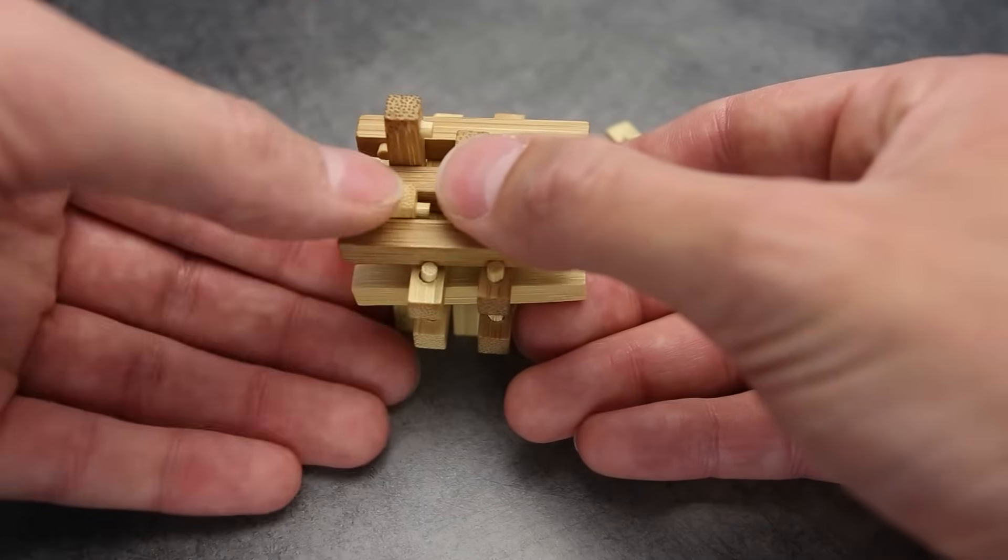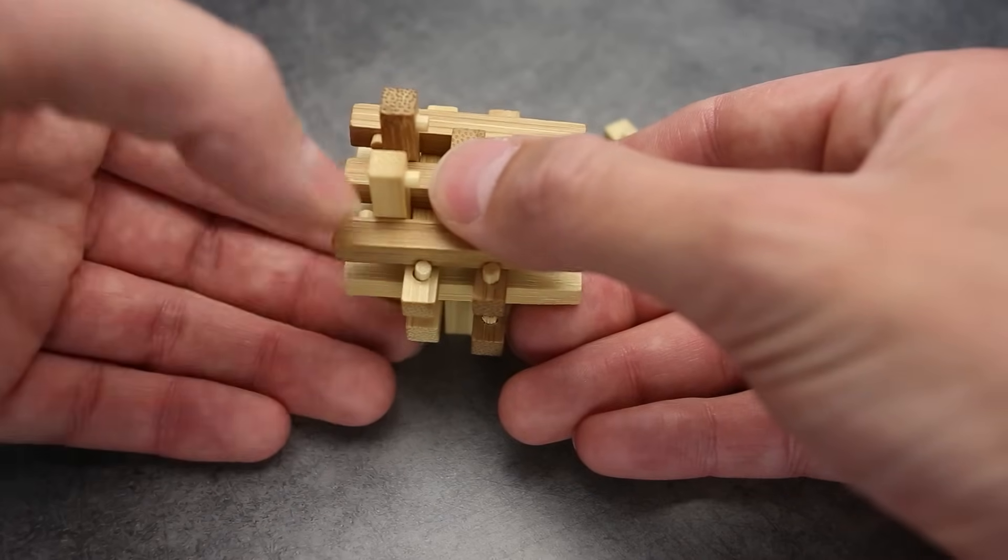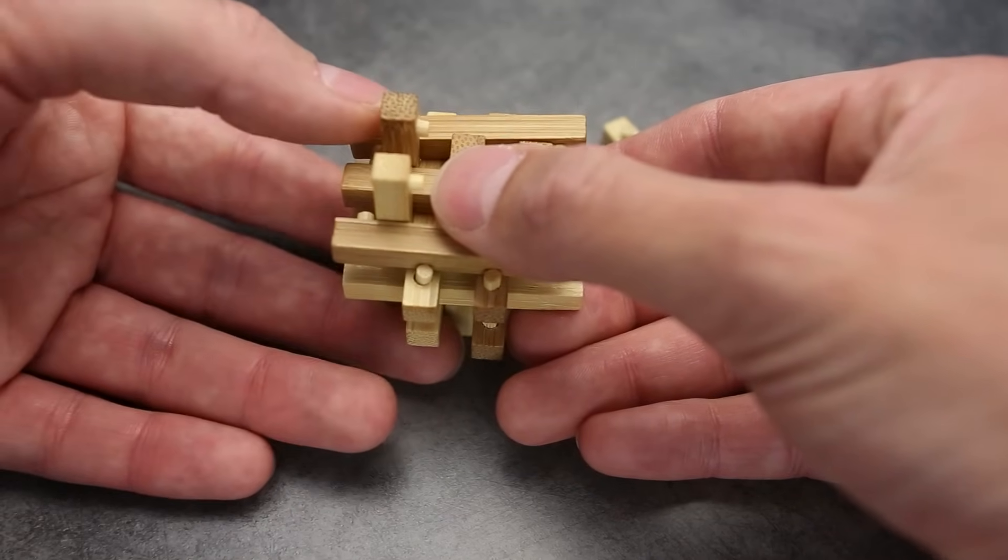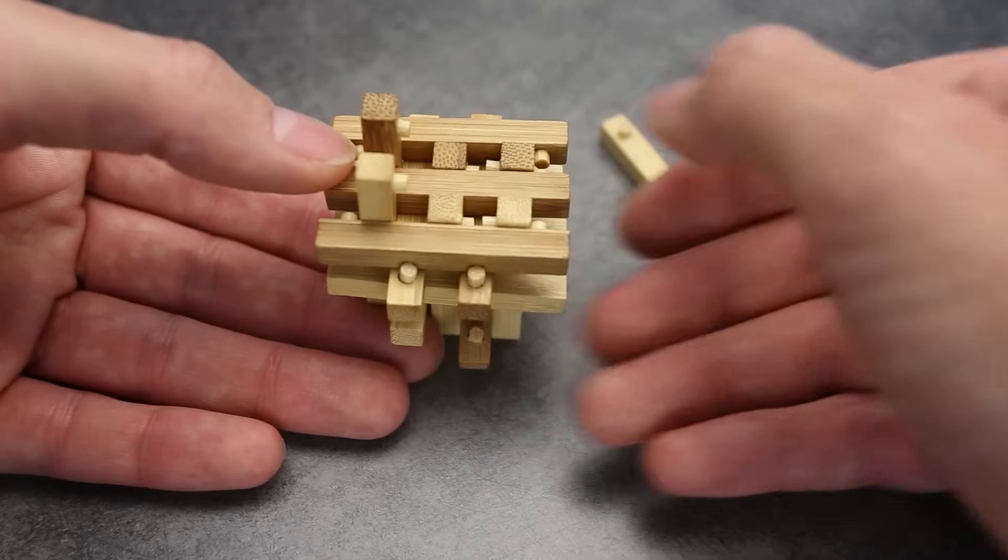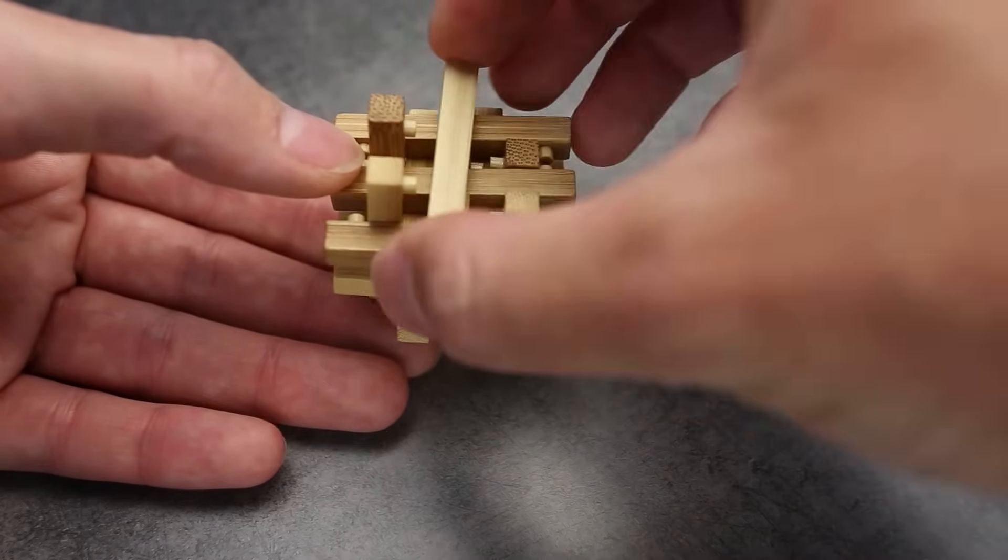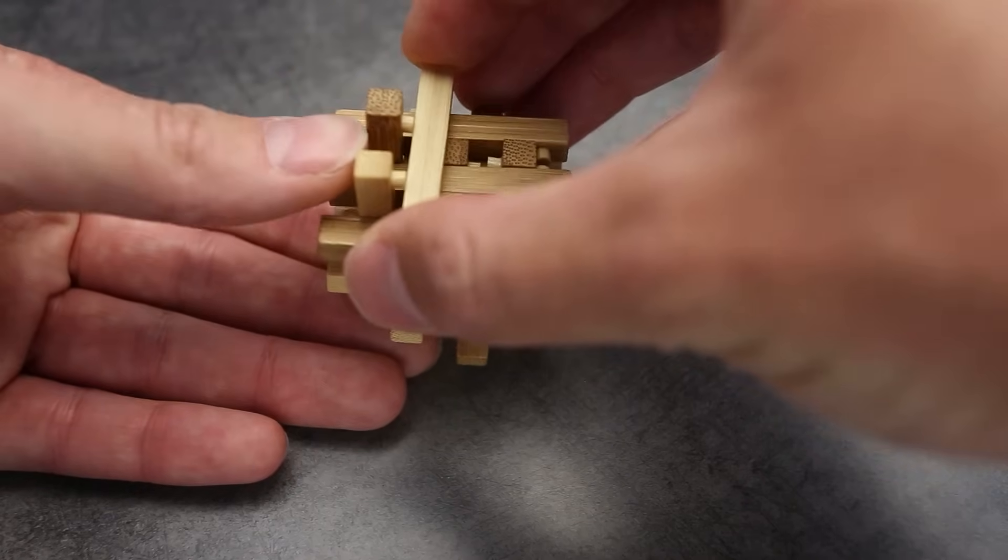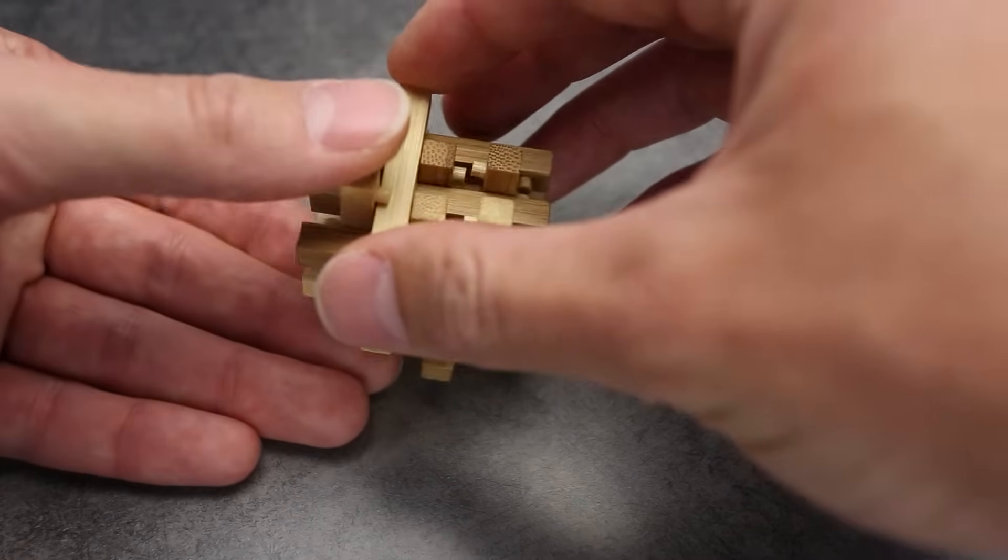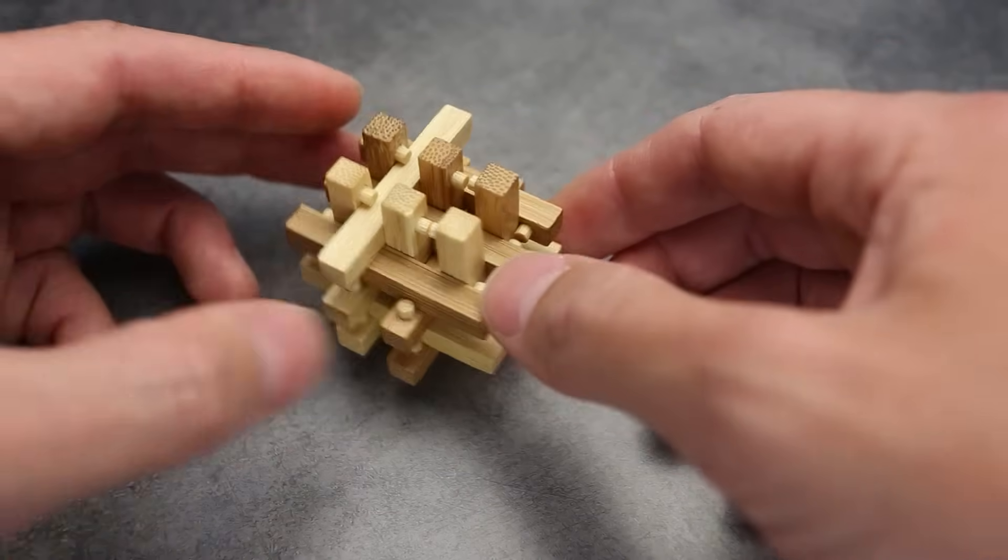But keep in mind that two pieces on the left are supposed to stay up. And now we have to take this part, face lips down inside the cube, and put it there.